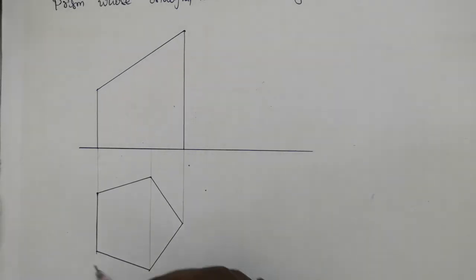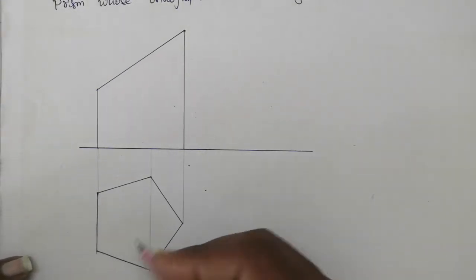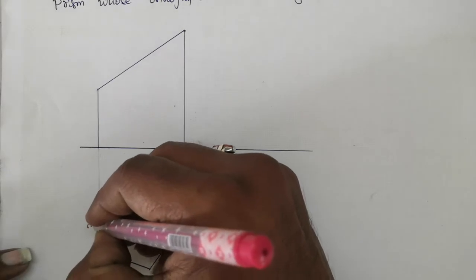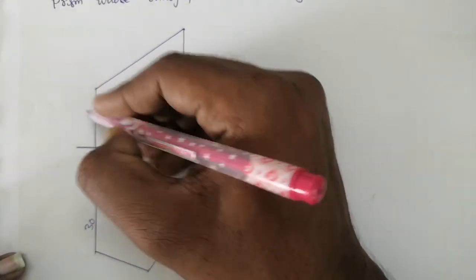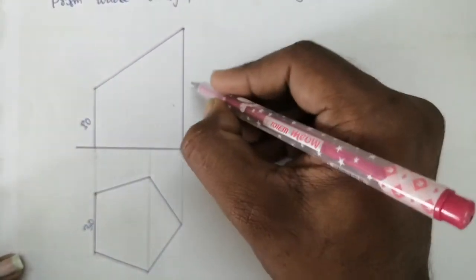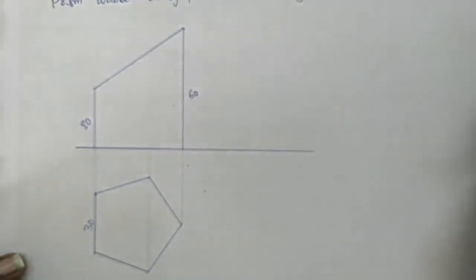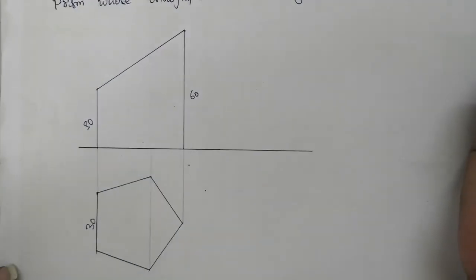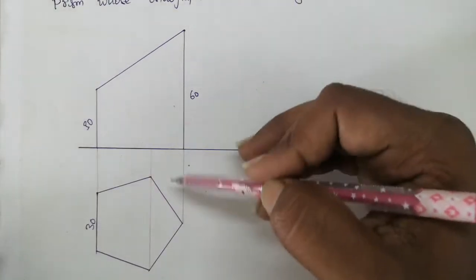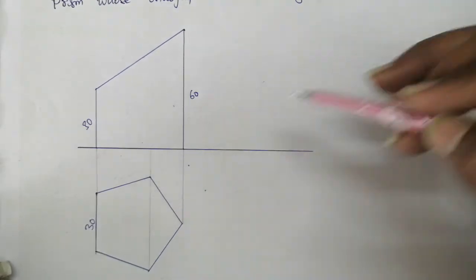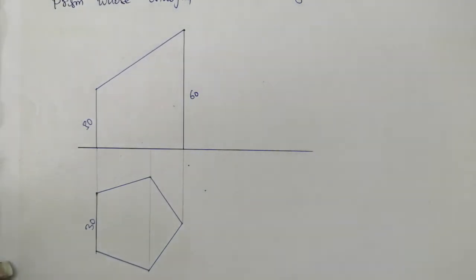The sides of this truncated pentagonal prism are: the base is having 30mm and this side is having 30mm, and the height, total height of the axis is 60mm. These are the dimensions given to us. With these dimensions we are going to draw the development. First we are going to draw the same orthographic views, then we are going to draw the development. Let's start.